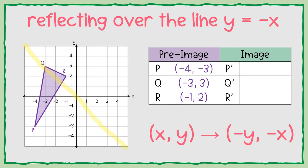So the rule for this one is you are still going to switch places. See how the y becomes first and x is the last number. But this time you're going to change the sign of both numbers. So for point p, I have negative 4, negative 3.